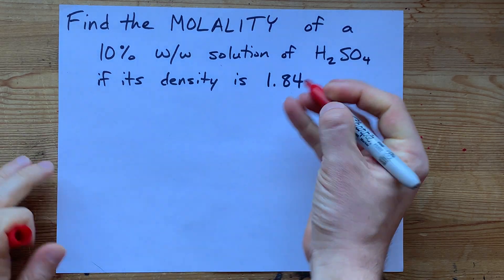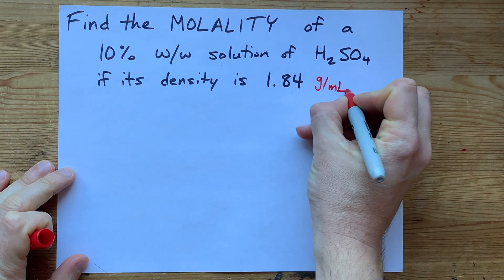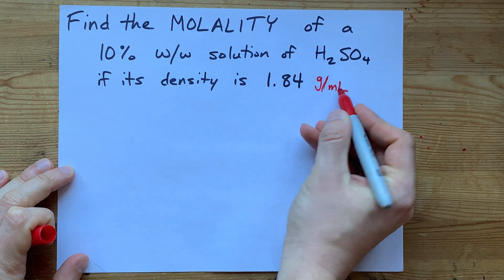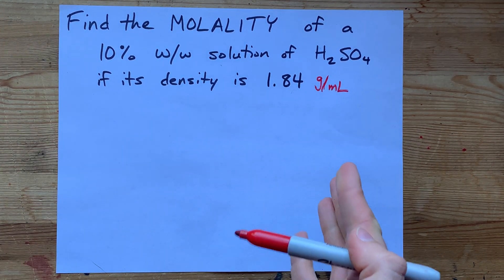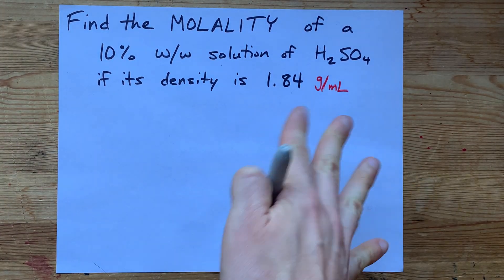Now, density for solutions is almost always done in grams per milliliter. You can also say grams per centimeter cubed. That's important because we're going to need the volume in a moment.